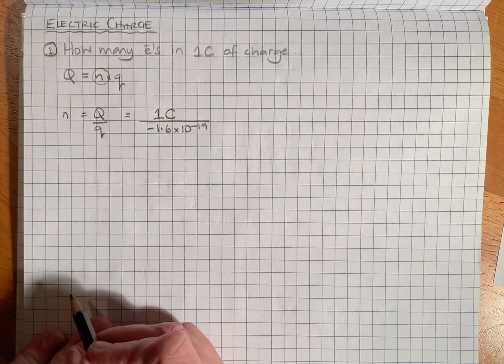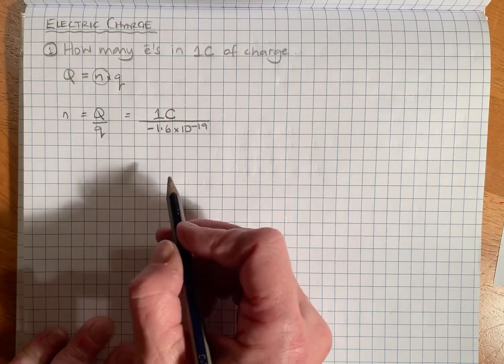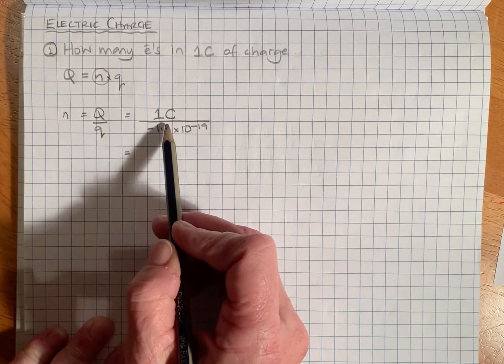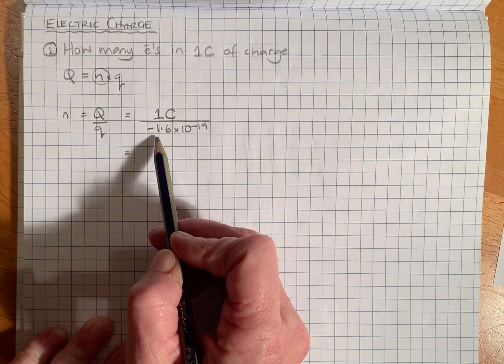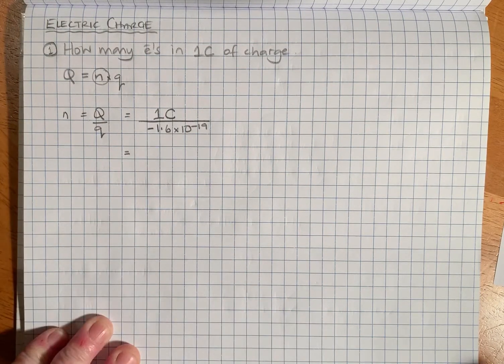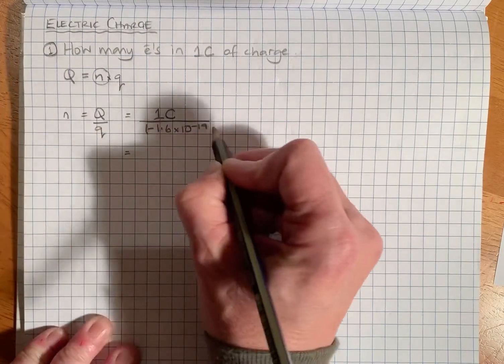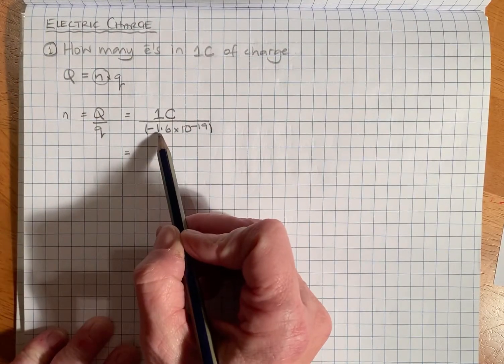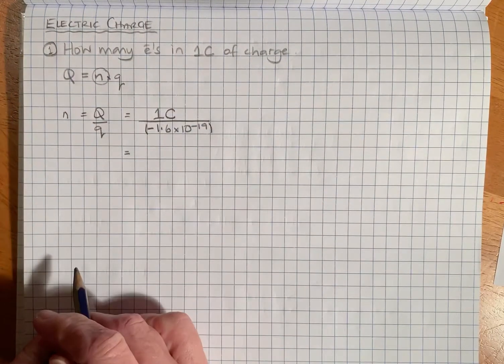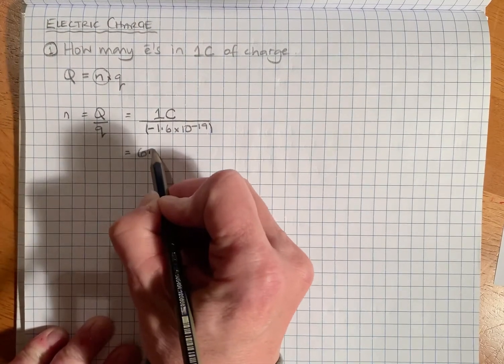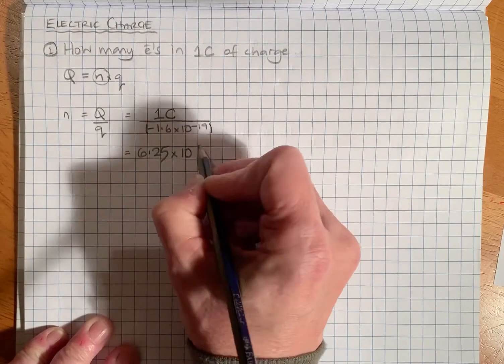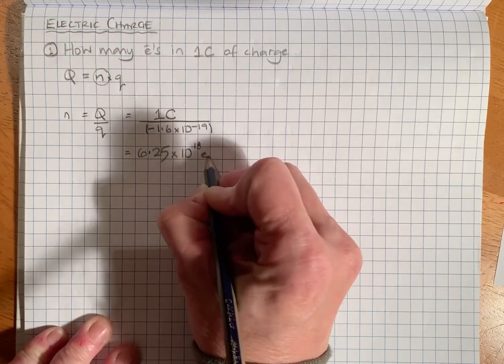The charge on an electron is -1.6 times 10 to the minus 19. You don't need to know that off by heart, you are given it in the exam, but you probably will learn it because you use it quite often. When you put one divided by -1.6 times 10 to the minus 19 into your calculator, remember to put the bottom number in brackets, otherwise the one will divide by -1.6 and that answer will be multiplied by 10 to the minus 19, which will be a wrong answer.